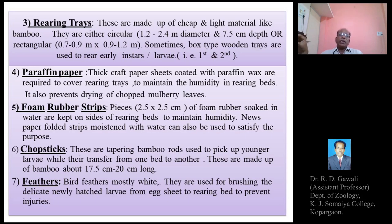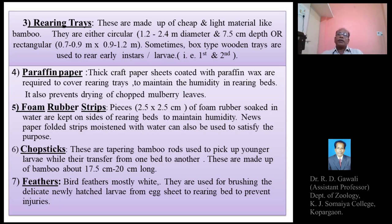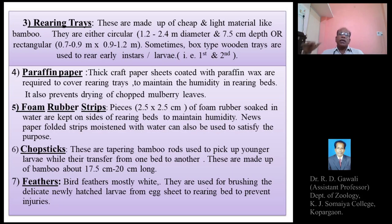For example, if 50 trays are used in first instar, this doubles to 100 in second instar, 200 in third instar, and up to 600 or 1000 trays in fourth or fifth instar. The number of trays increases at each larval transformation to provide adequate space.